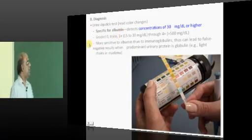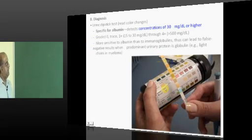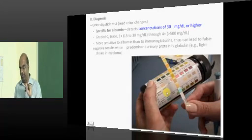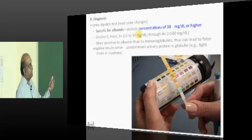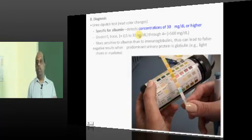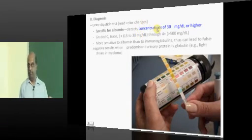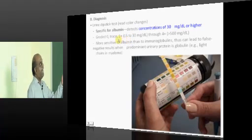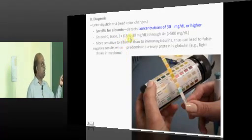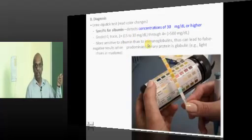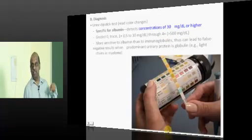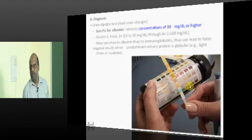Dipstick tests which are specific not for total urinary protein but even for albumin also are available. A dipstick can detect if albuminuria is more than 30 grams per deciliter or higher. It is called 1 plus if albuminuria is between 15 to 30 milligrams per deciliter, and more than 500 mg per deciliter if the albuminuria shows 4 plus color coding positive.